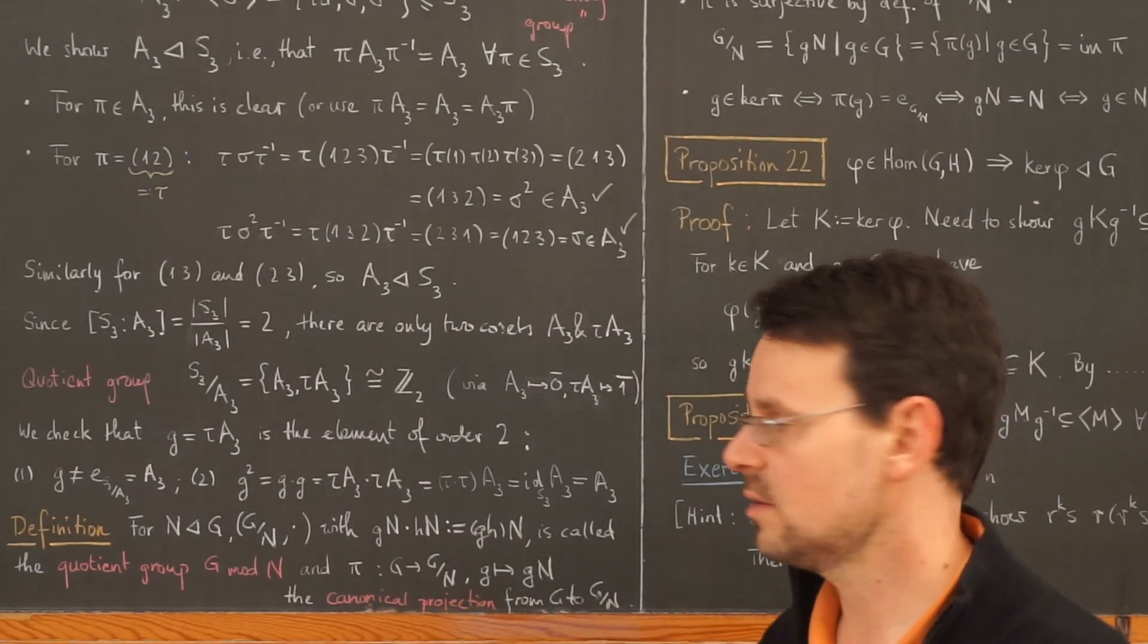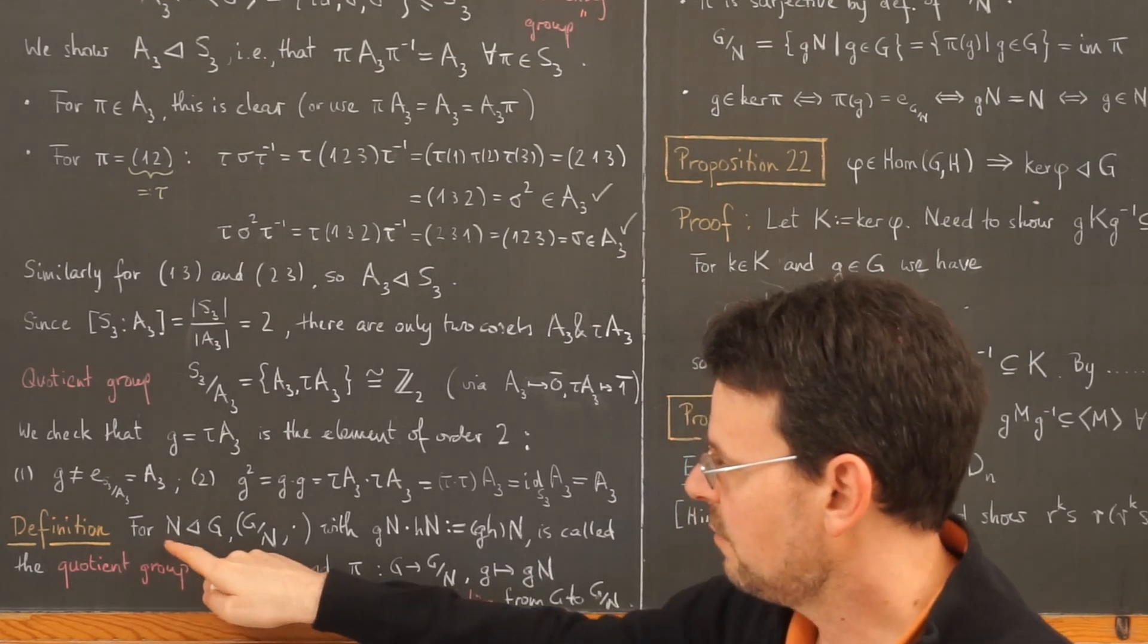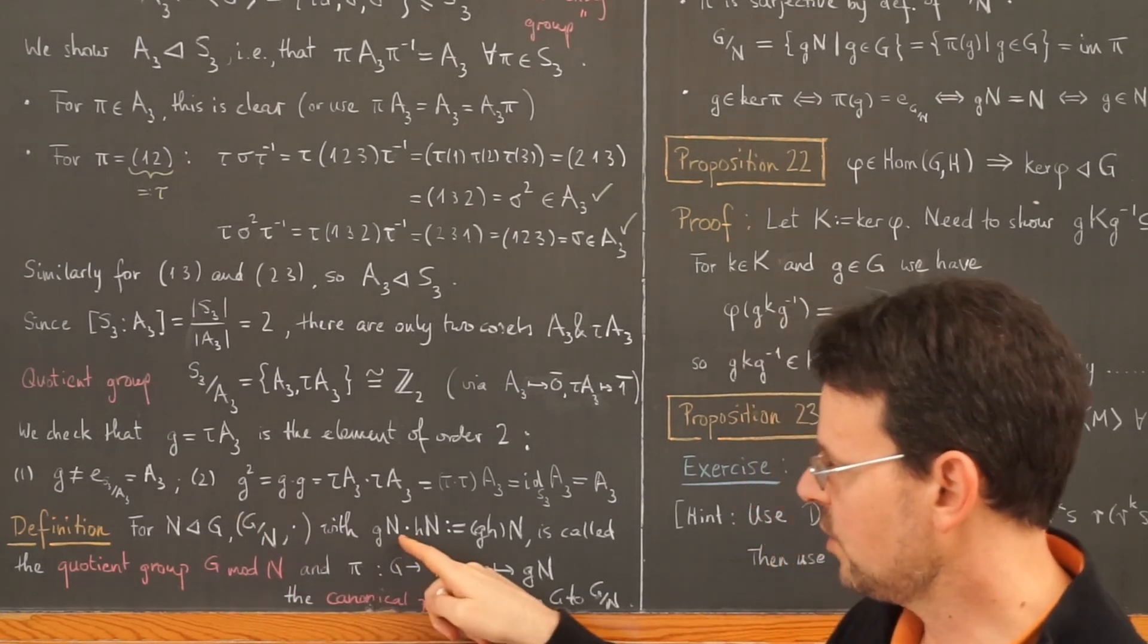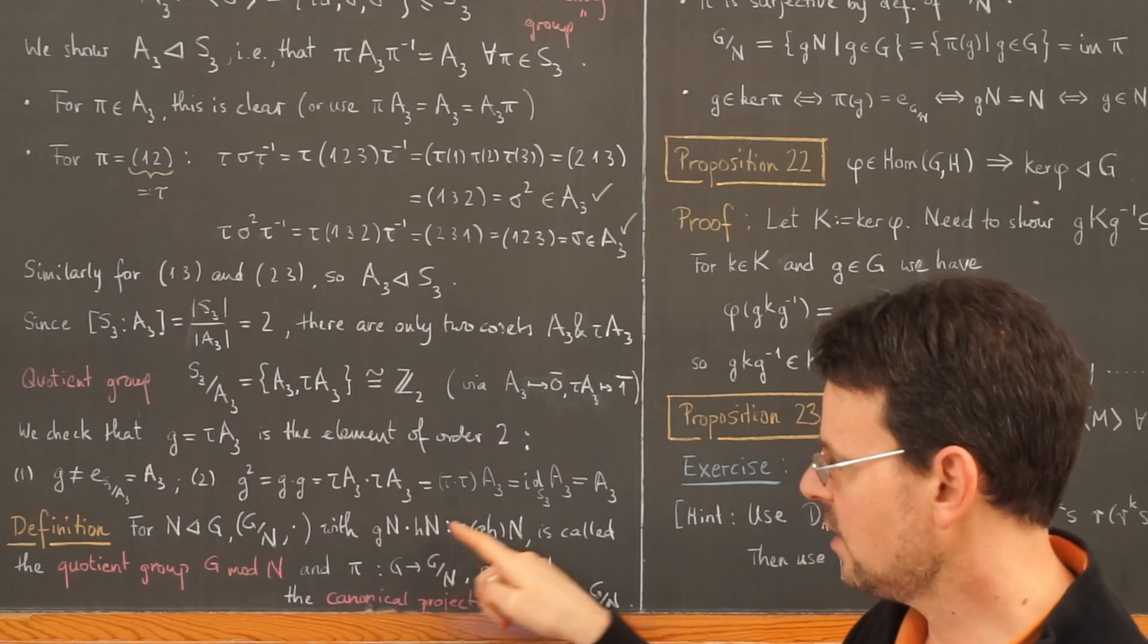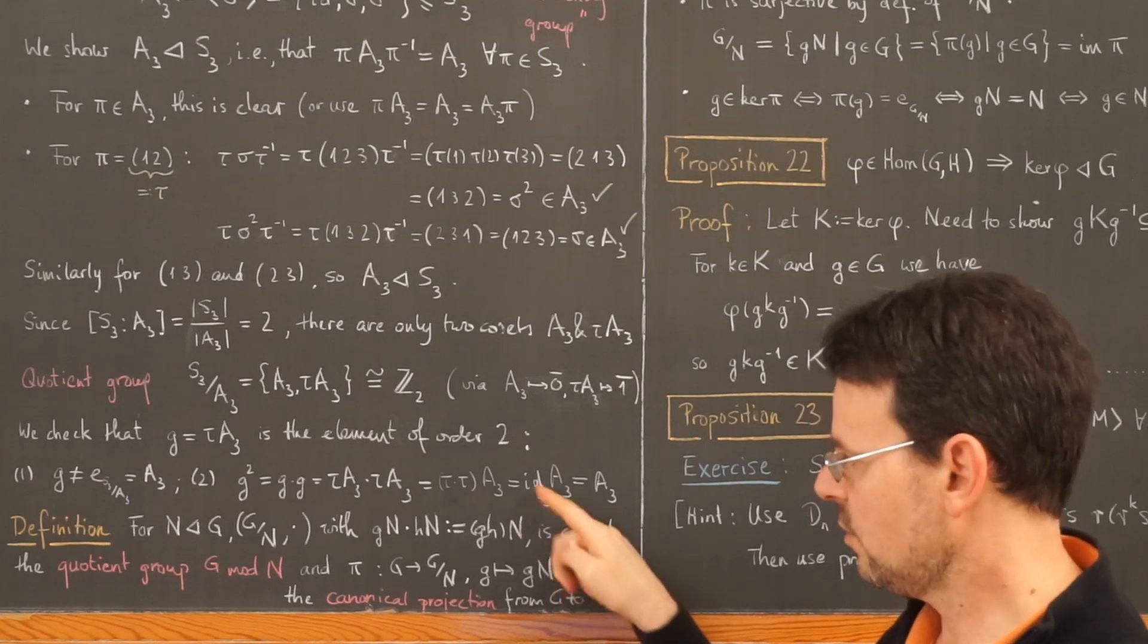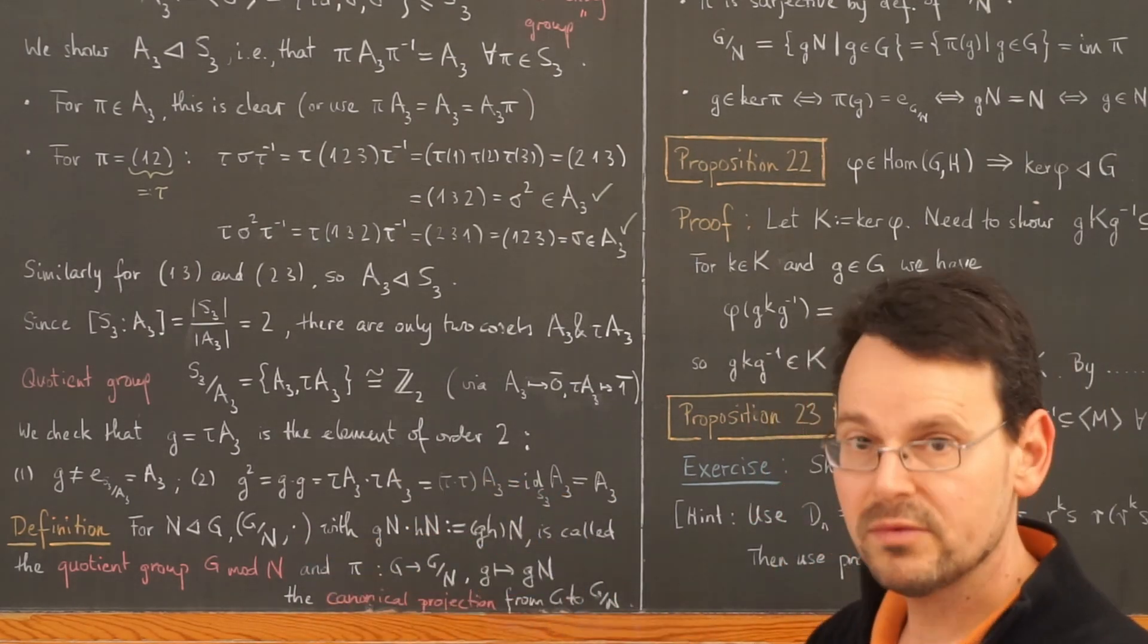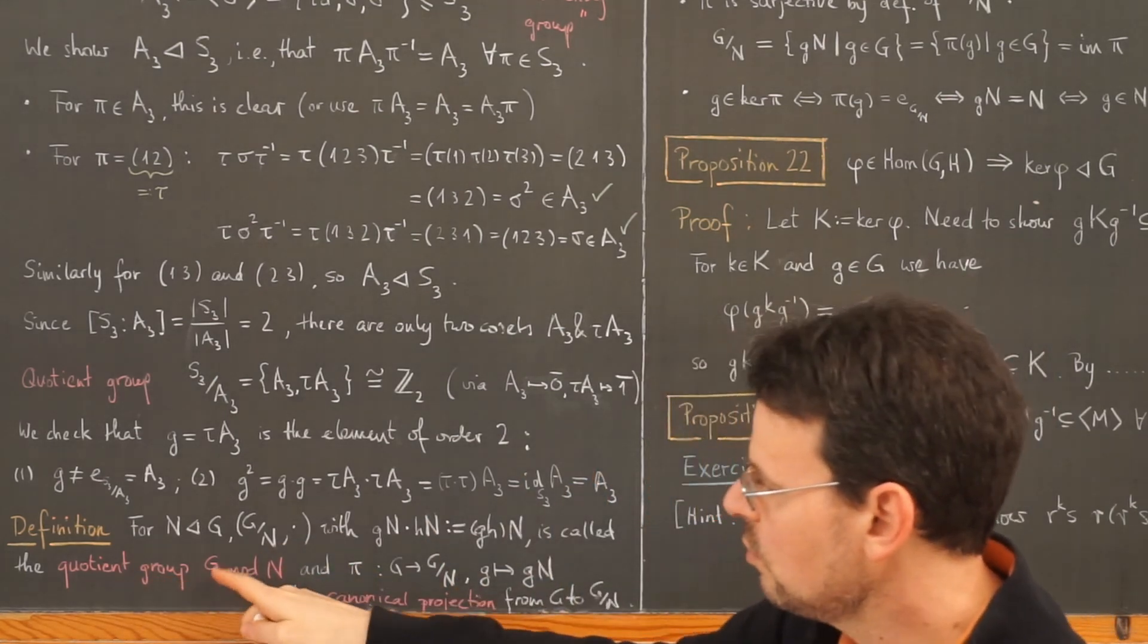Okay, now let's put all these facts together in one definition. We say that for a normal subgroup N of G, the quotient set together with this operation here, GN times HN is defined as GH and then left coset with respect to N. This here is a group, we proved that in the last video, and it is called the quotient group G mod N. And the map that sends any element to its left coset, so it goes from G to this quotient group, is called the canonical projection from G to G mod N.